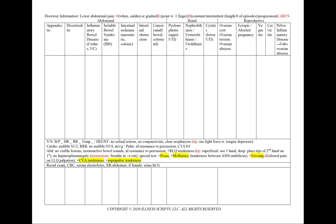We'll divide our lower abdominal case into abdominal, renal, and reproductive etiologies. For all cases, we should order a rectal exam, CBC, serum electrolytes, an x-ray of the abdomen, and if our patient is female, a urine HCG. In appendicitis, our supporting points include lower abdominal pain, particularly in the right lower quadrant.